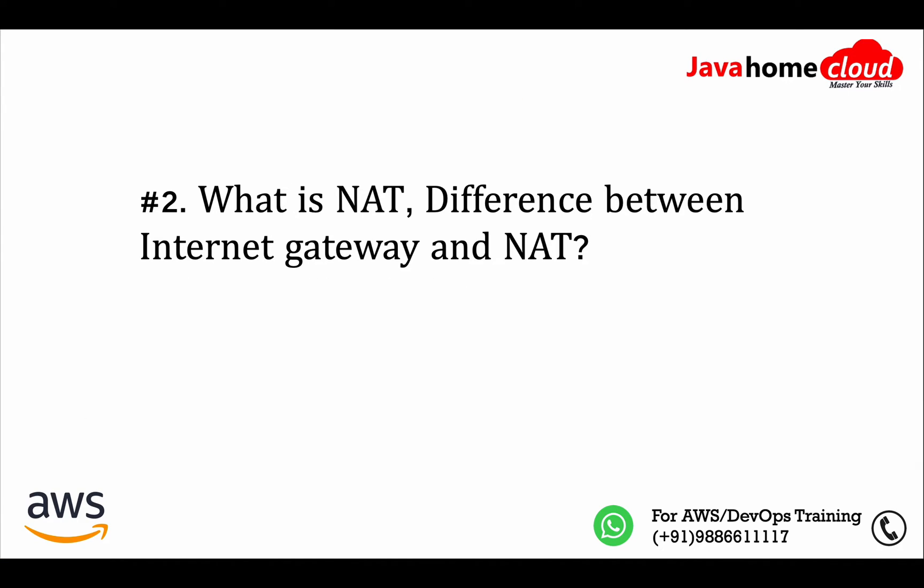The next question: what is NAT, and what is the difference between an Internet Gateway and NAT? NAT stands for Network Address Translation. NAT is used for providing outbound-only internet access. NAT is commonly used in private subnets — if EC2 instances in a private subnet want to download something from the internet, for example patches, we configure either a NAT Gateway or NAT instance. It allows only outbound internet connections and does not require public IPs, so EC2 instances in a private subnet with private IPs can use NAT to download from the internet.